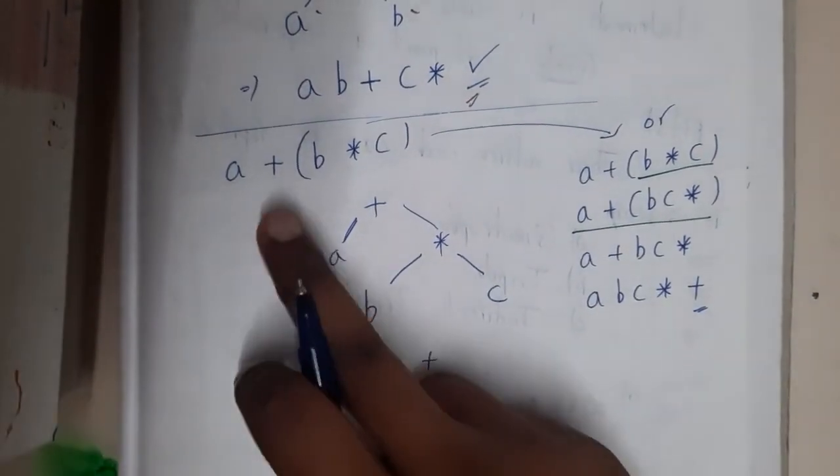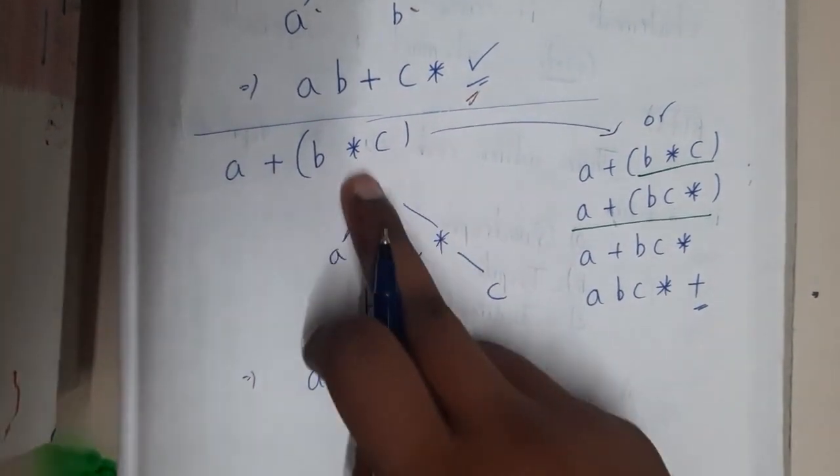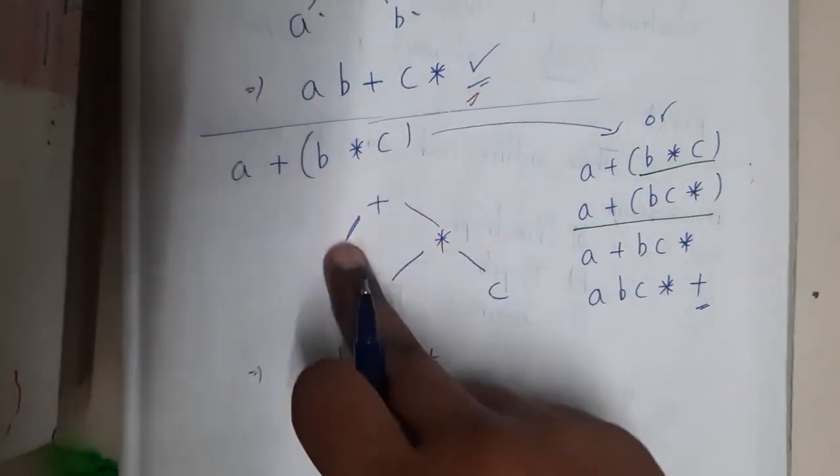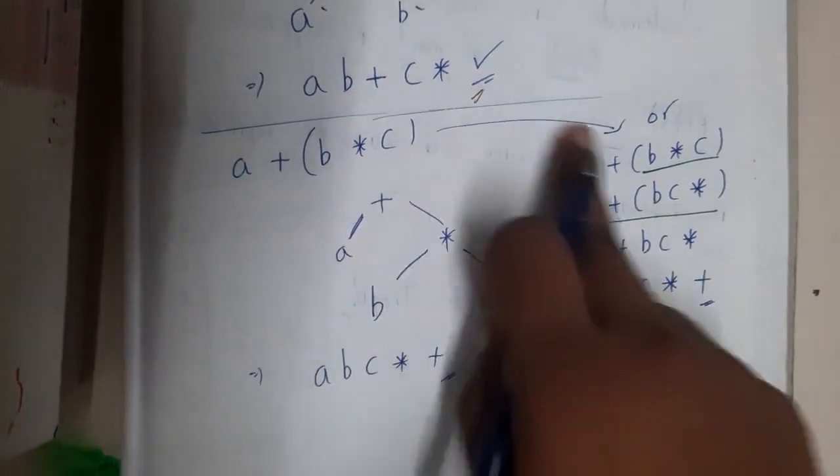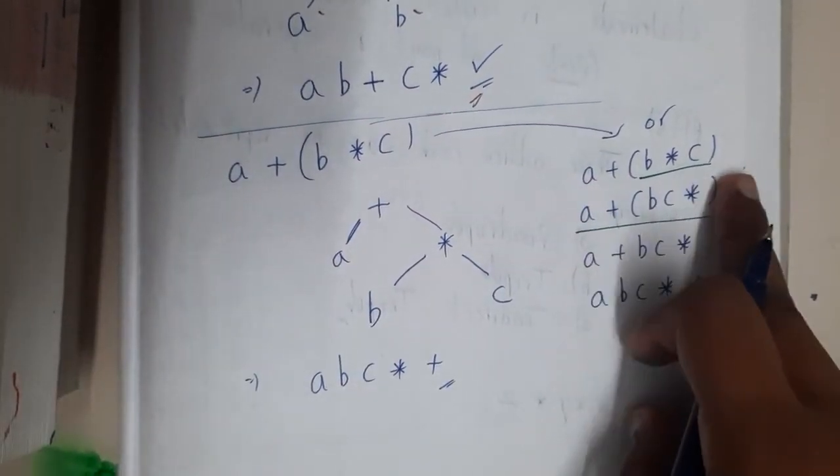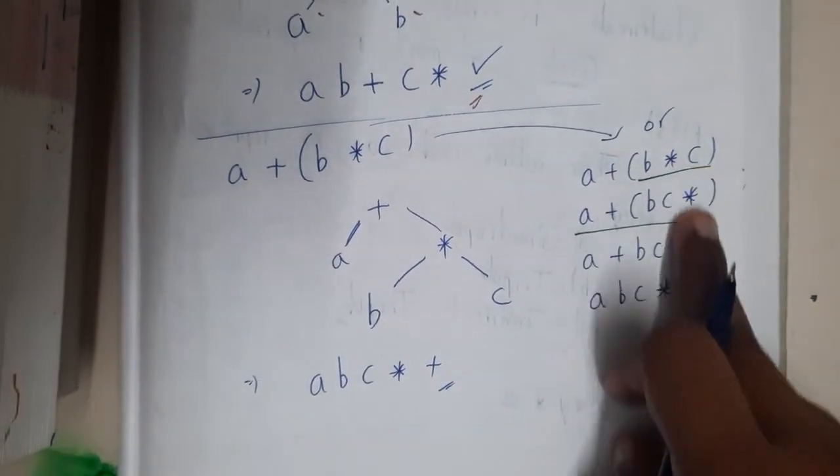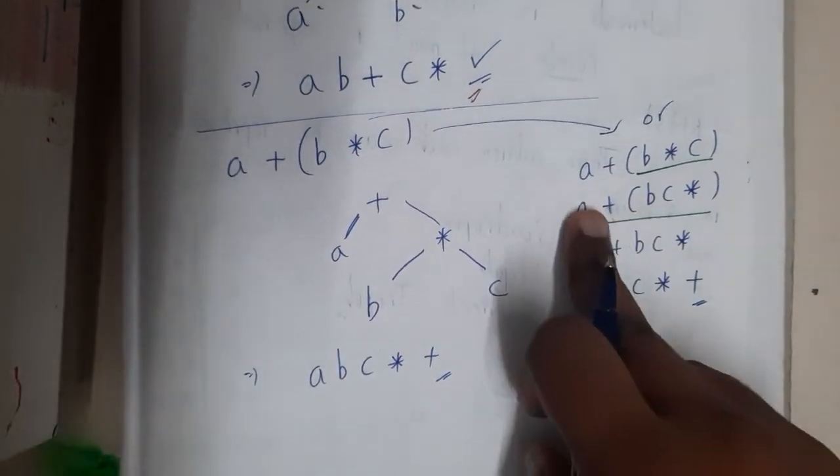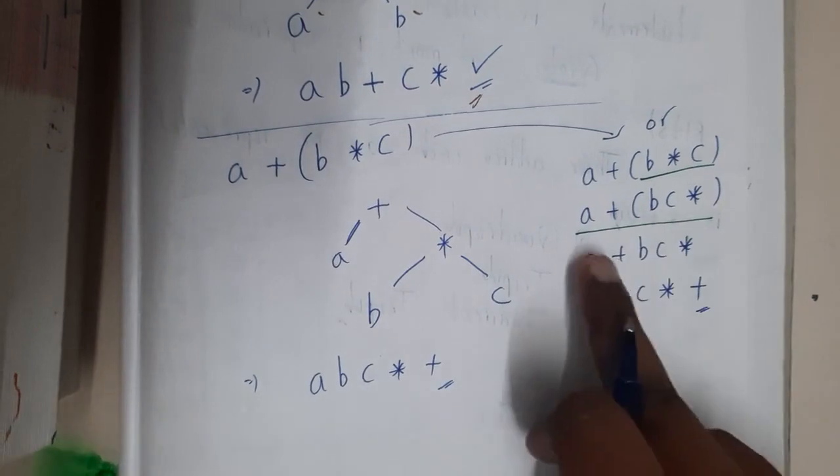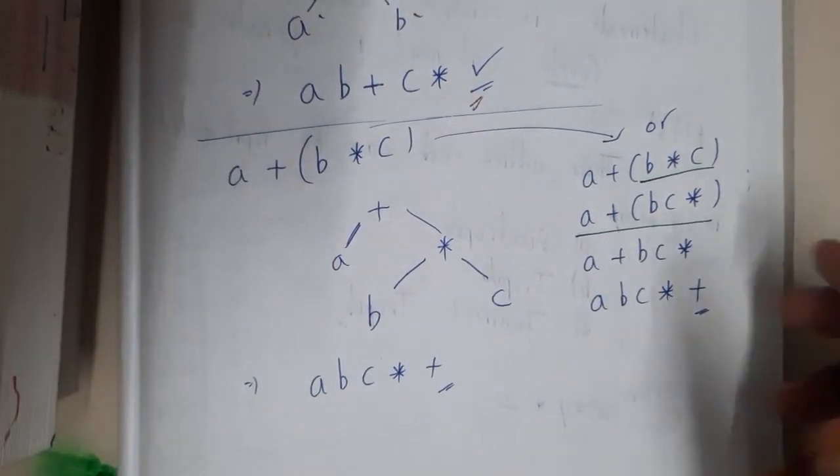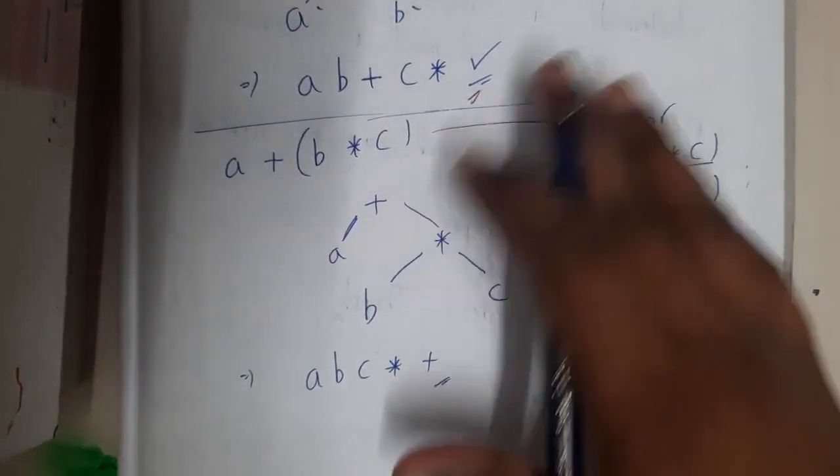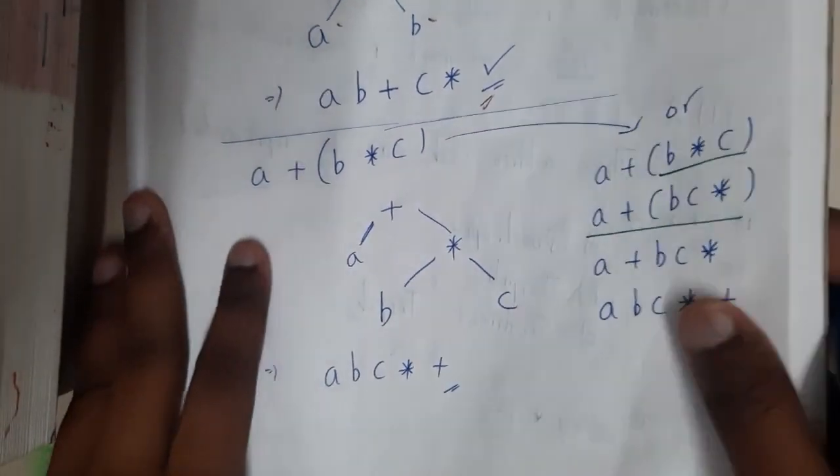Similarly, a plus b into c. Initially b into c will be done, and then for that we'll be adding a. Or you can use directly, so a plus b into c. Here b c star will be there, and later on a plus b c star is nothing but a b c star plus. So we got it in that way. This is nothing but the postfix representation.